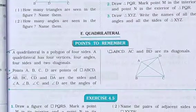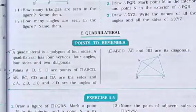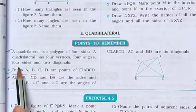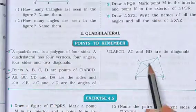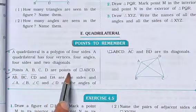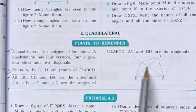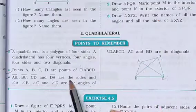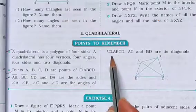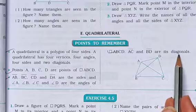Next point: Quadrilateral. A quadrilateral is a polygon of four sides. It has four vertices, four angles, four sides and two diagonals. For quadrilateral ABCD, the sides are AB, BC, CD and DA; the angles are angle A, angle B, angle C and angle D; and the diagonals are AC and BD.